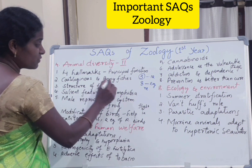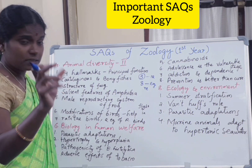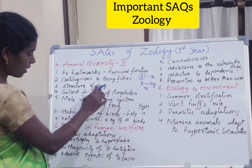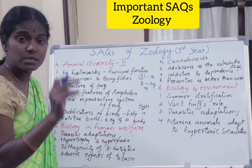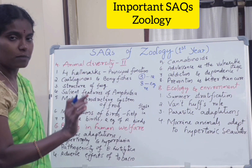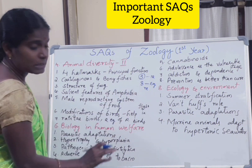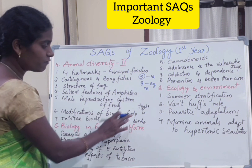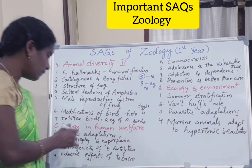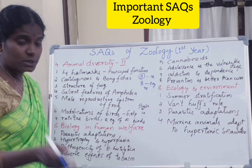Structure of frog — select questions that have a diagrammatic component. Male reproductive system of frog also has diagrams, so prefer these in the exam. Salient features of Amphibia with examples. Modifications of birds for flight — also important. Ratite birds and two examples of ratite birds, such as kiwi and ostrich.